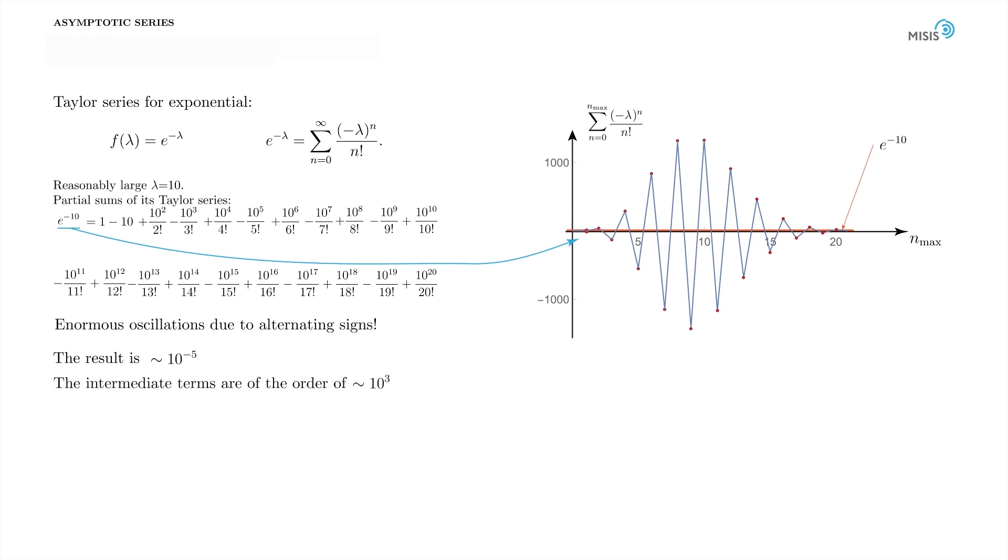The result is a tiny number, 10 to minus 5, yet it arises from the combination of terms of the order of 1000. Just look at these two orders—it's an eight orders difference. It is due to the alternating sign that such cancellation is possible.